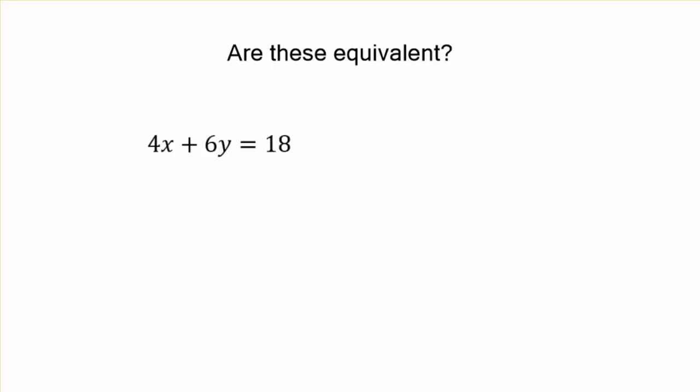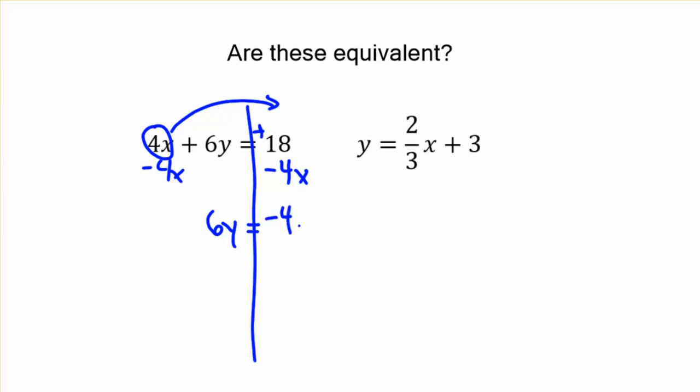Are these two going to be equivalent? 4x plus 6y equals 18 and y equals 2 thirds x plus 3. Again, we're going to take that 4x and move it to the other side because we're going to solve for y. You subtract out the 4x. And notice we have a positive 18 and a negative 4x. We're going to go ahead and skip a step. We write 6y equals and then just bring down the negative 4x and the positive 18.